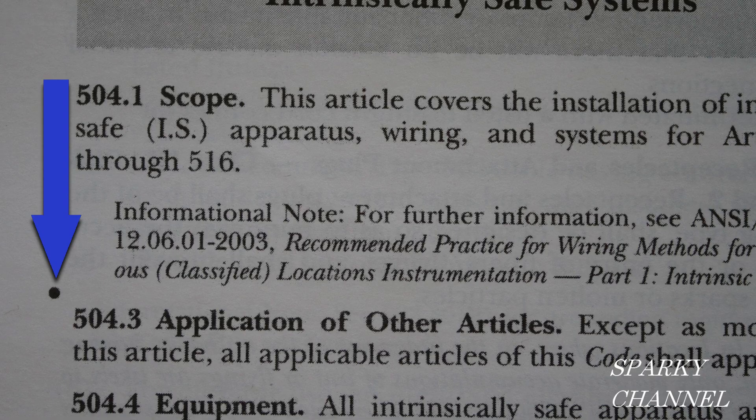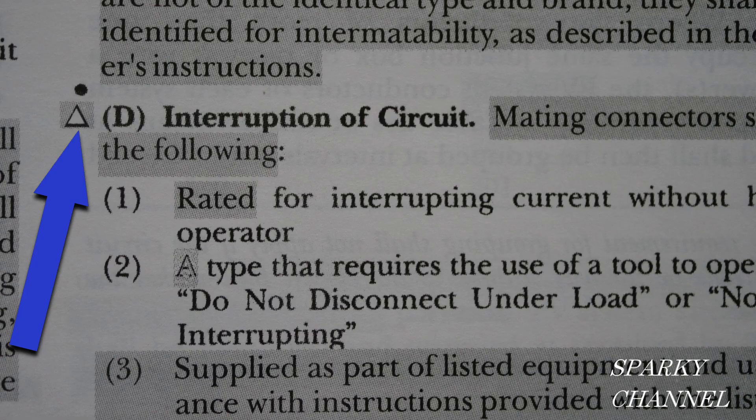As you're reading through the code book, you might see a period symbol. What does that mean? And when you're reading through the code book, you might find a delta symbol — what in the world is that for?